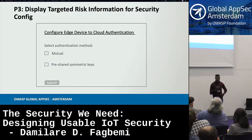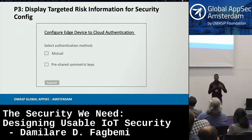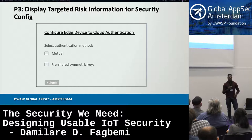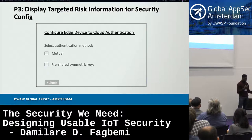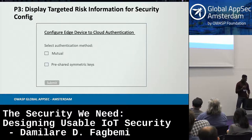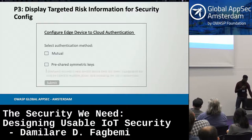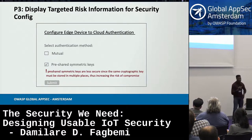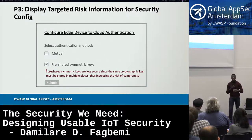The third principle is targeted risk information. How do you aid the user setting up a system to understand the risk of the choices they make? For example, connecting an IoT edge device to a cloud and selecting authentication options — mutual TLS or pre-shared symmetric keys. If the user chooses shared symmetric keys, you provide information saying: you're having the same key in multiple locations, which increases the risk of compromise.